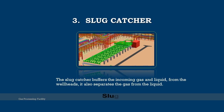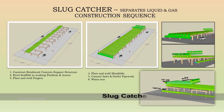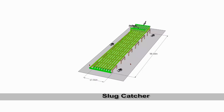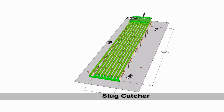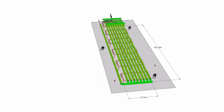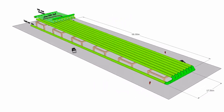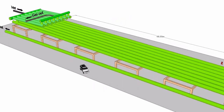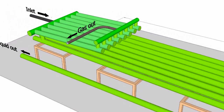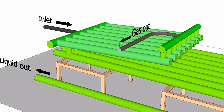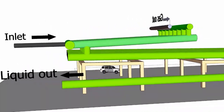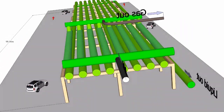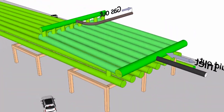The slug catcher buffers the incoming gas and liquid from the well heads. It also separates the gas from the water and oil. The slug catcher is supported on reinforced concrete columns and beams. Shown is the construction sequence.